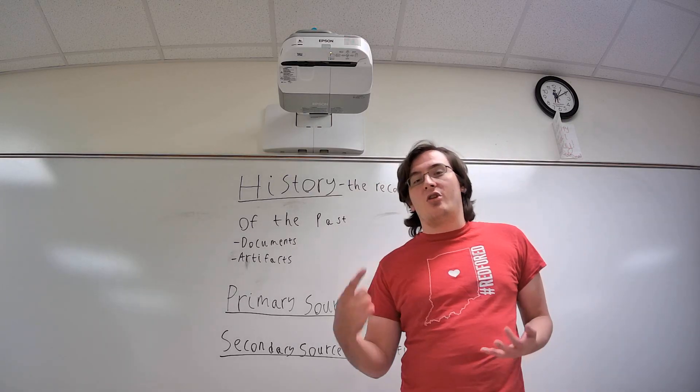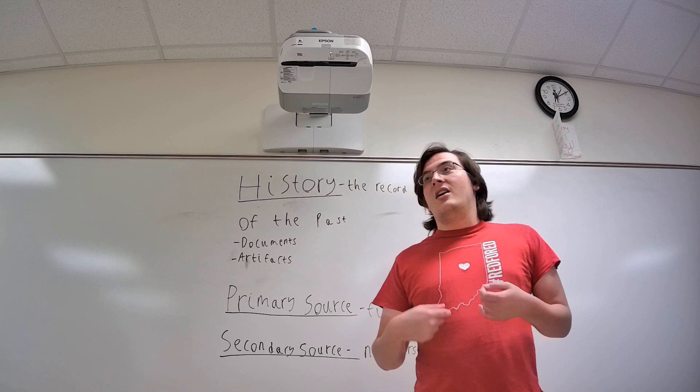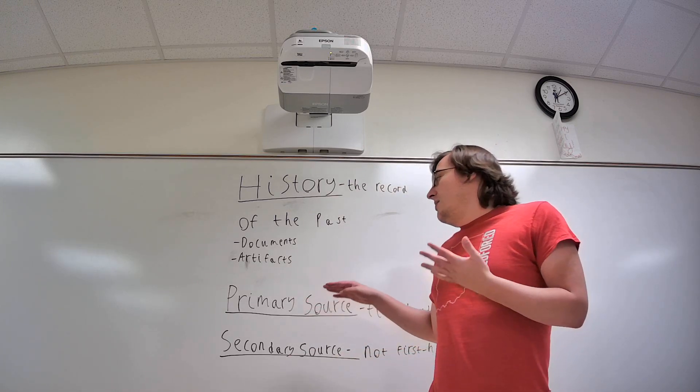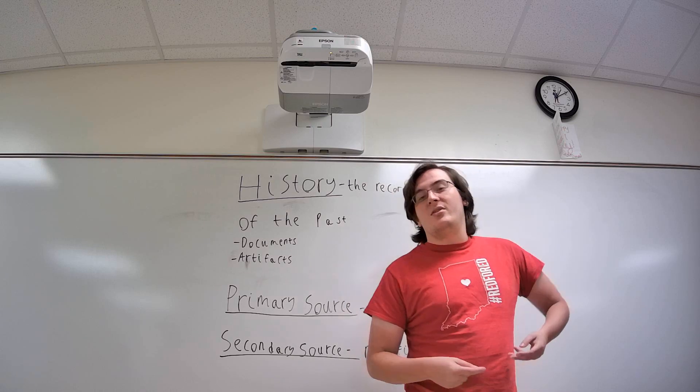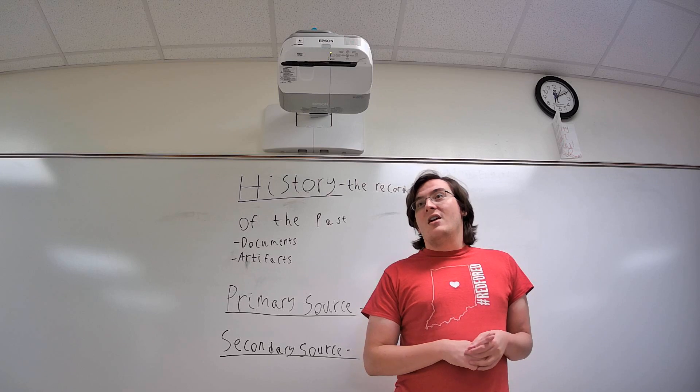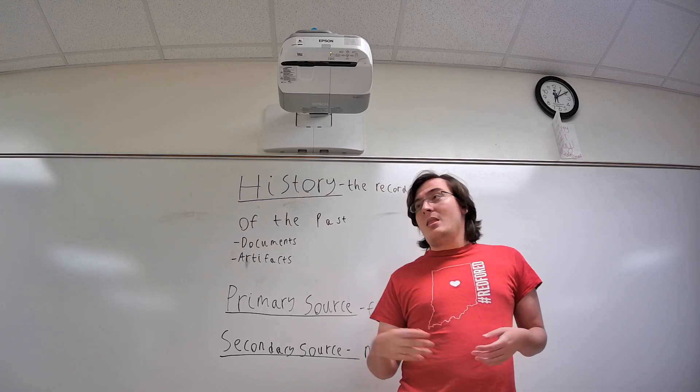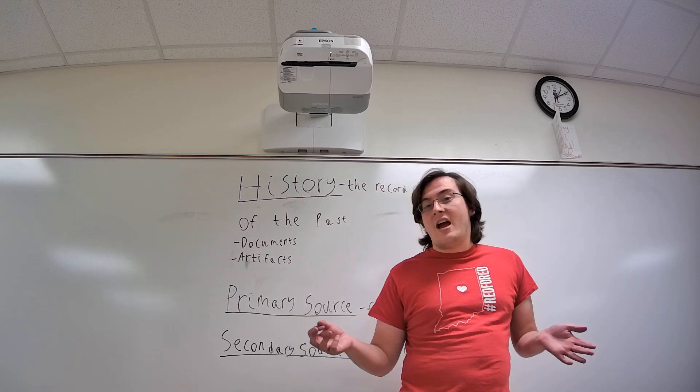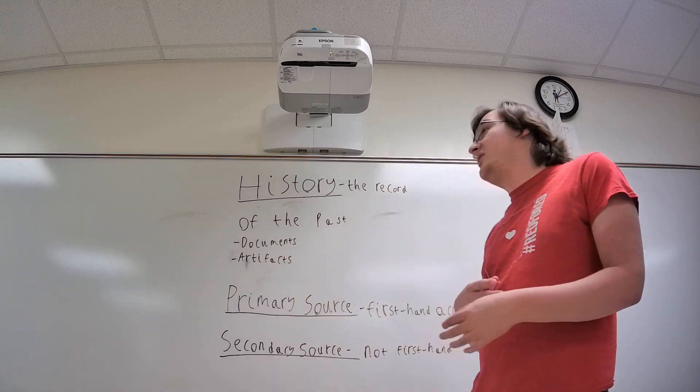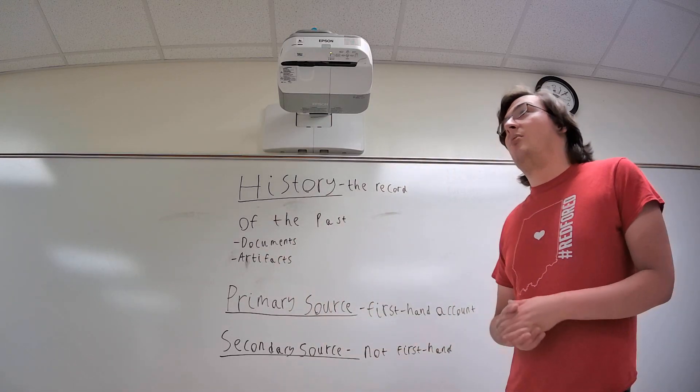Types of things that would be primary sources include journals, diaries, letters, and correspondence between people. Primary sources could also include things like government records and official documents. It could even include photographs, as long as they're photographing the period in question.